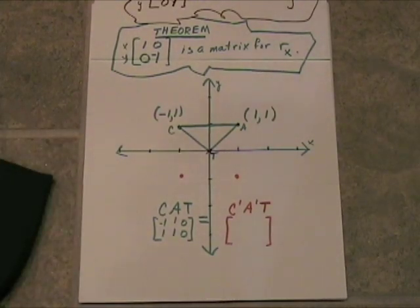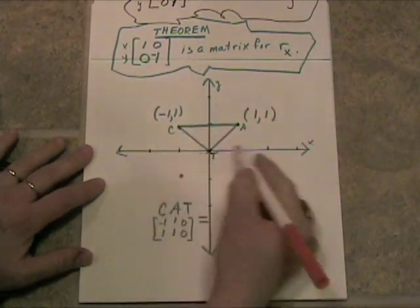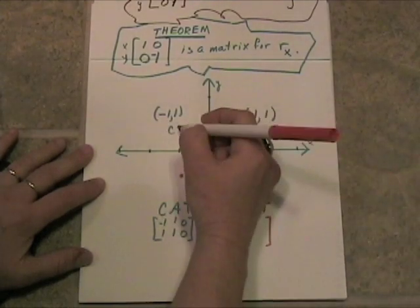Alright, now if we're going to reflect over the x-axis, that means we have to get all these perpendicular bisectors and the x-axis has to be the bisector of all these segments rather.